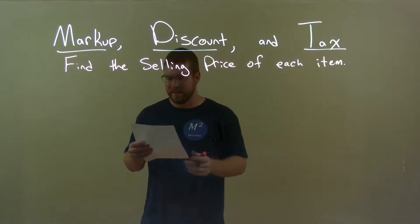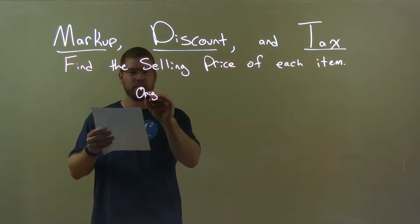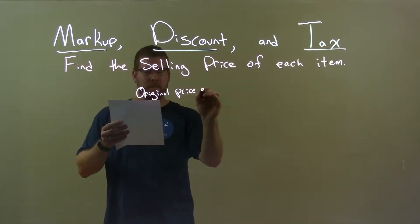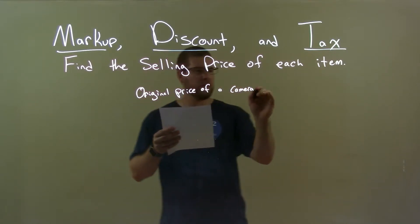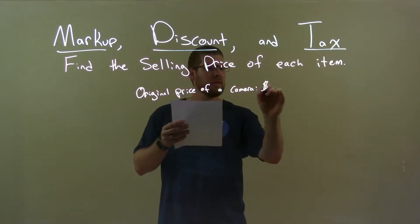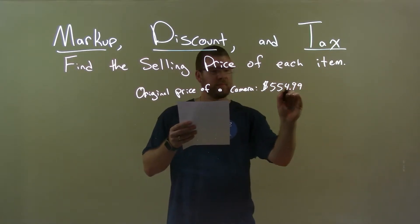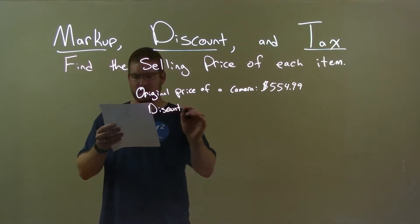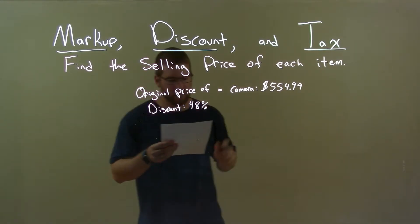So, if I was given this item, the original price of a camera is $554.99. Its discount here is 48%. We got 48% off.